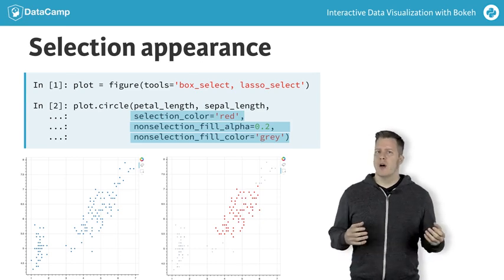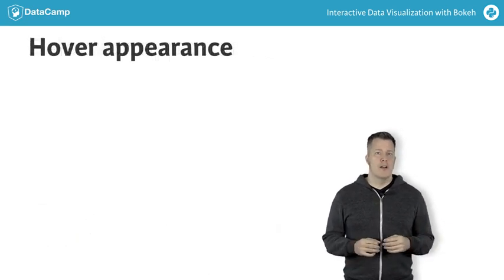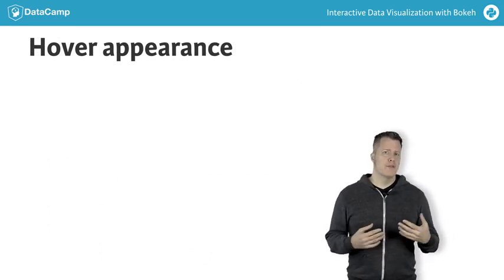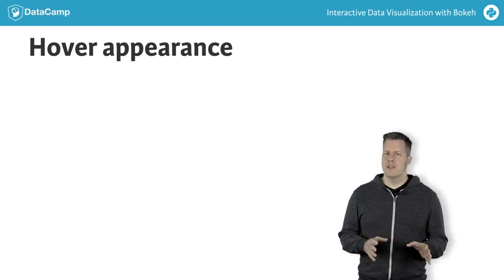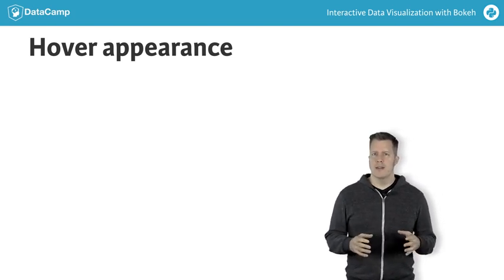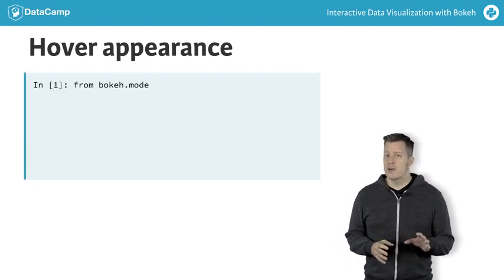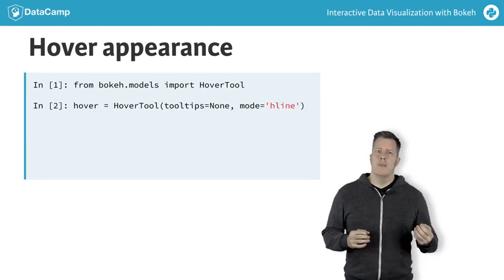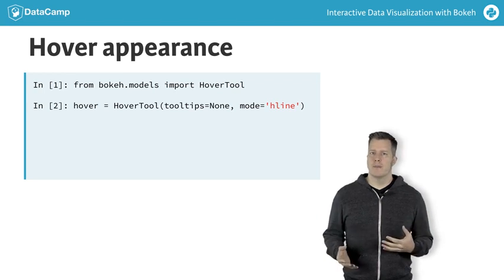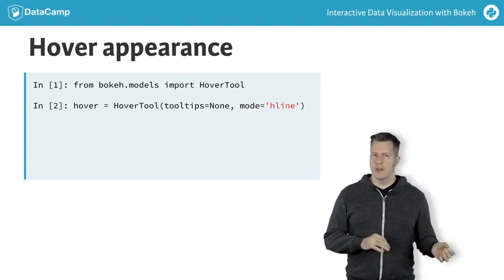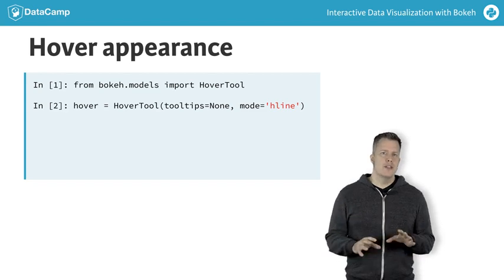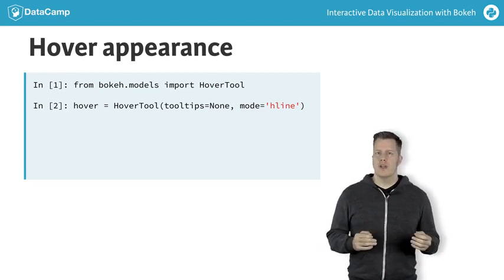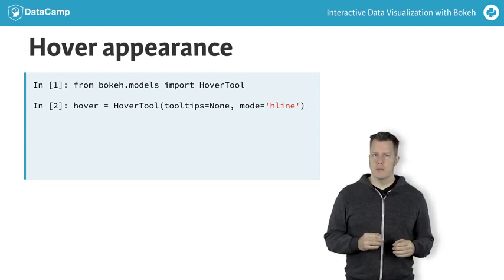It's also possible to add a hover tool to Bokeh plots. The hover tool can be used to drive hover tooltips, which we'll see later, but can also be used to inform changes to the visual appearance of glyphs. The hover tool is a bit more sophisticated. We import hover tool from bokeh.models and create a hover tool instance called hover. We pass in the arguments tooltips equals none and mode equals hline, which configures the hover tool not to display any tooltips and to use a horizontal line under the current mouse position to perform hover inspections.